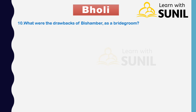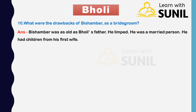Next: what were the drawbacks of Bishambar as a bridegroom? Answer: Bishambar was as old as Bholi's father. He limped. He was a married person and had children from his first wife.